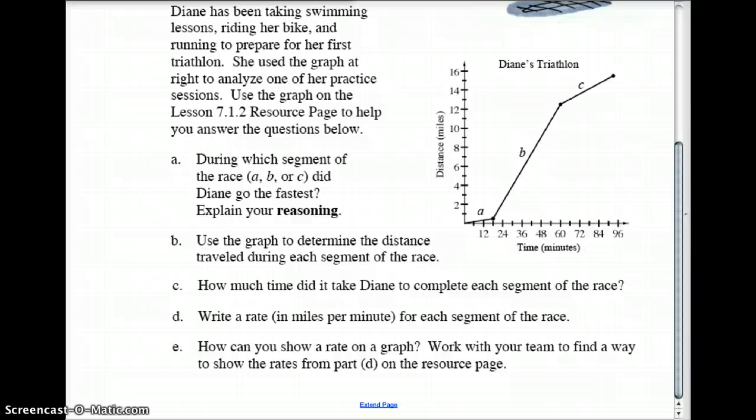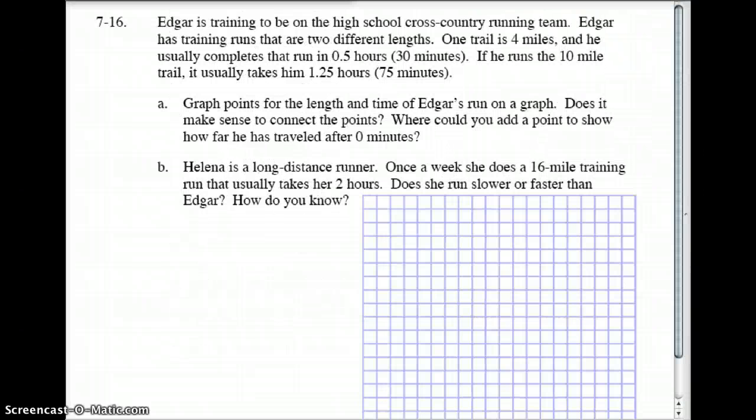Let's move on to another question, number 16, and this is one where you get to do a little bit of work here. So you can see the graph I've got here. Hopefully you'll put this on your graph paper, but what you're going to do is you're going to track Edgar's time here. Edgar can run two different lengths. Sometimes he'll run four miles. When he runs four miles, it takes him 30 minutes to do that.